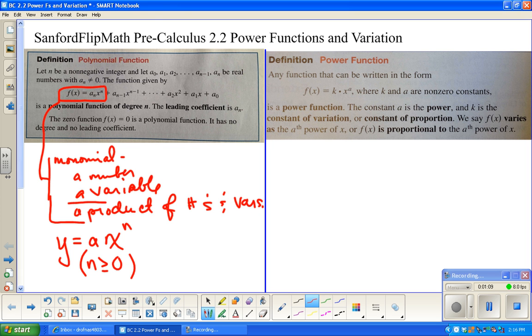So we're talking about things like 3x to the third, negative 5x, 7 is considered a monomial, pi is a monomial. The only catch is that this needs to be an integer greater than or equal to zero. So no negatives, no fractions, that kind of thing.